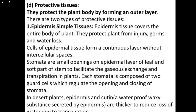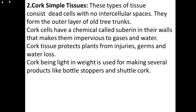Stomata are small openings on the epidermis layer of a leaf and soft parts of the stem to facilitate gaseous exchange and transpiration. Each stomata is composed of two guard cells that regulate the opening and closing. In desert plants the epidermis has a cuticle — a waxy layer. You may have seen that water placed on a lotus leaf does not stay because of this waxy layer, which reduces water loss due to transpiration.